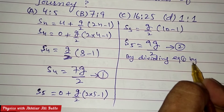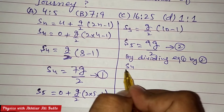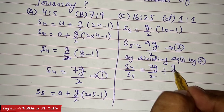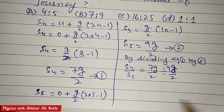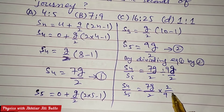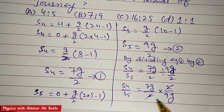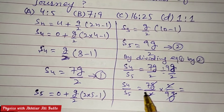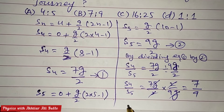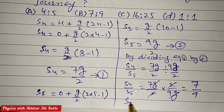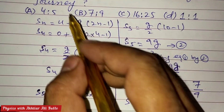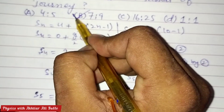Dividing equation 1 by equation 2: distance in fourth second divided by distance in fifth second equals 7g upon 2 divided by 9g upon 2. The 2s cancel with 2 and g cancels with g, so the ratio of distance in fourth second to fifth second is 7 upon 9. Therefore, the correct option is B: 7 ratio 9.